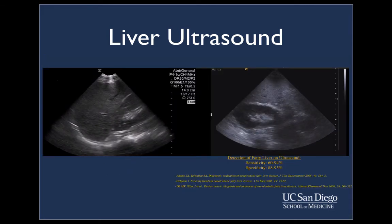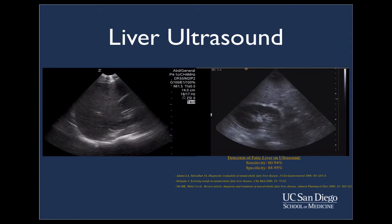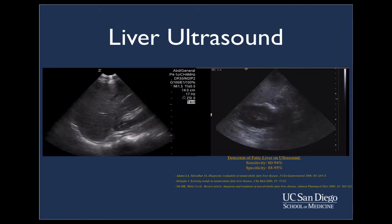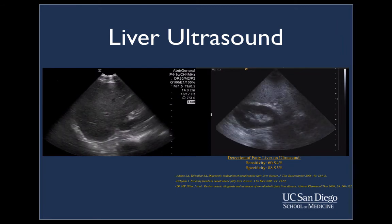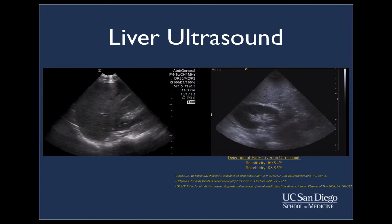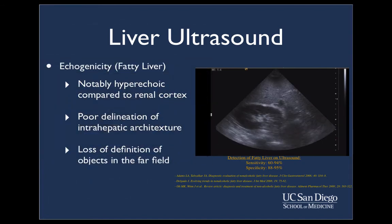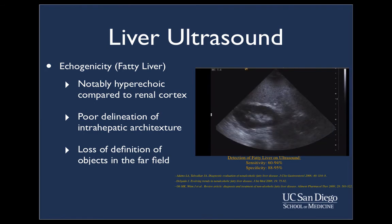Here, we can compare the normal-appearing liver on the left panel with an example of a patient with fatty liver disease on the right panel. Note the increased echogenicity of the liver in comparison to the right renal cortex. Additionally, the fatty liver makes it difficult to clearly delineate the intrahepatic vessels.